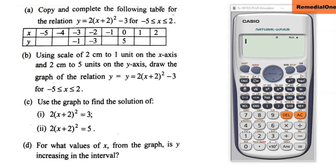We are supposed to copy and complete the following table for the relation y = 2(x + 2)² - 3, and then after that we're supposed to graph it and answer some questions. So let's go. All that we have been asked is just to copy and complete.